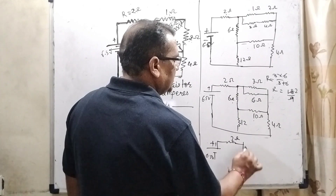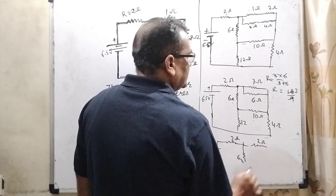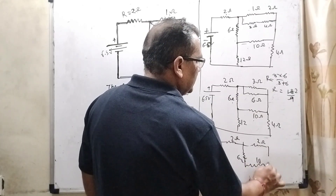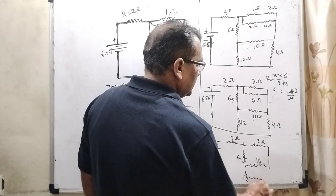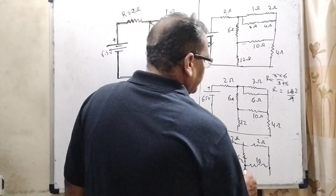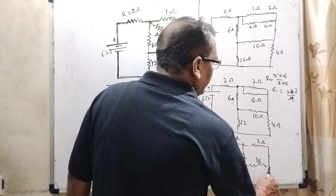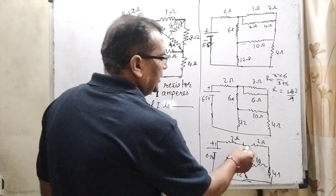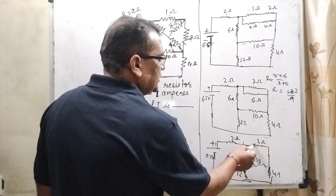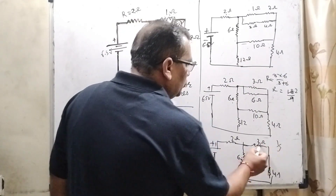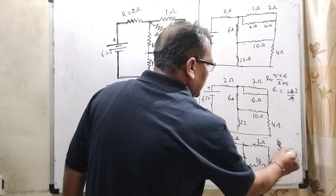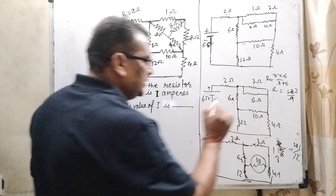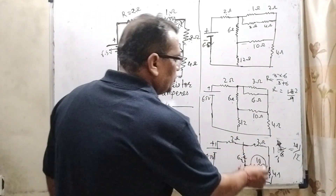Now we have 6 ohm, 2 ohm, 10 ohm, 12 ohm, and 4 ohm resistances connected with the battery. Again, you can see that the two adjacent resistances are in the ratio 1:3 — here 2/6 equals 4/12, both equal to 1:3. So applying Wheatstone bridge again, the 10 ohm resistance has no effect and can be removed.